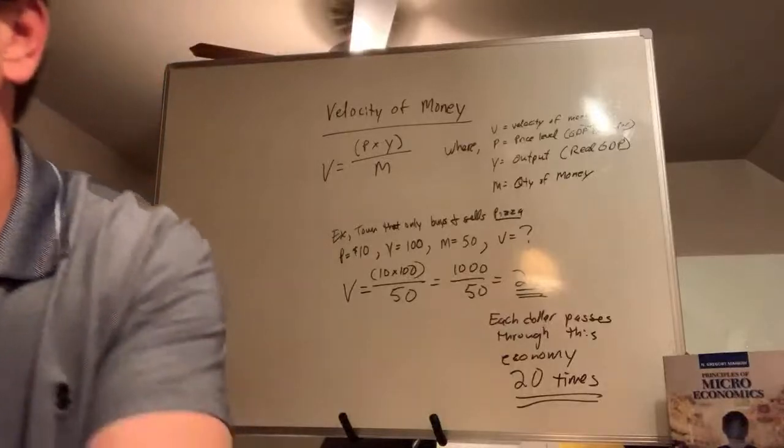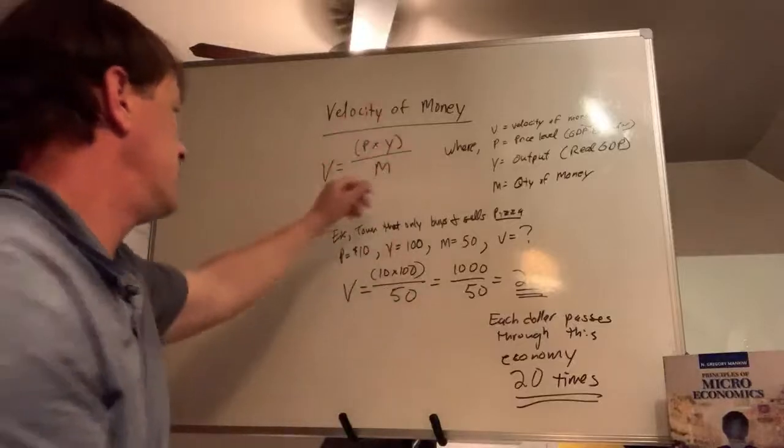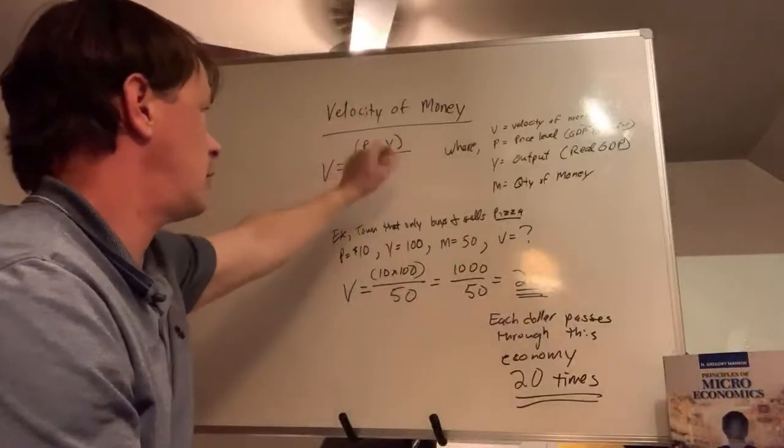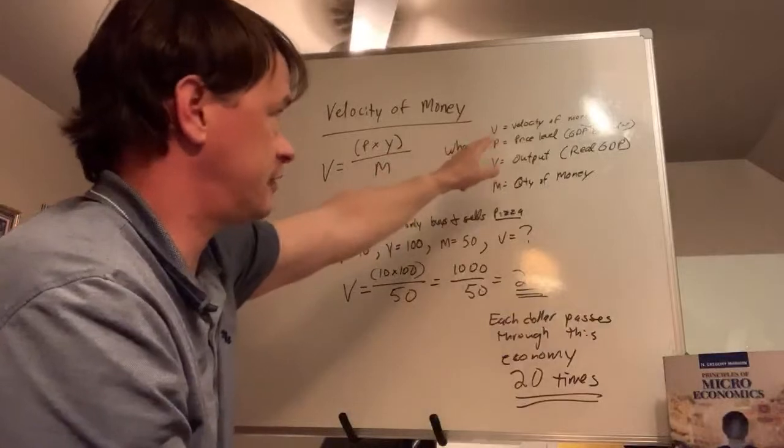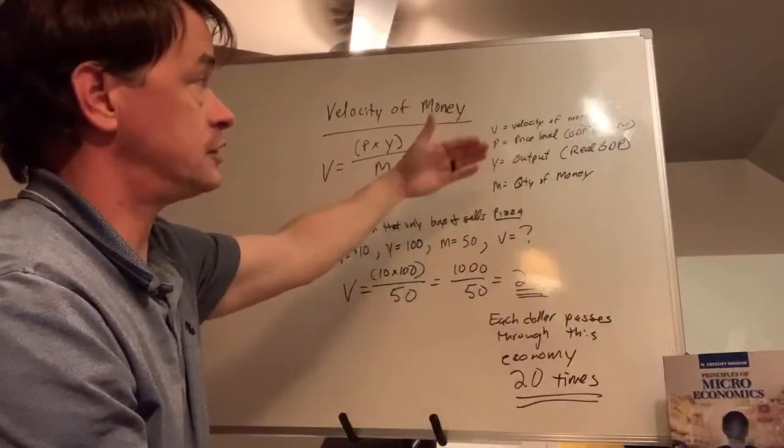Just a quick example. The general velocity of money is V = (P × Y) / M, where V is velocity of money, P is price level, and Y is output, which is real GDP.